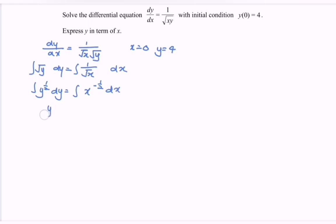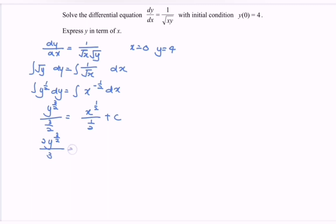Integrating both sides, we get y to the power of 3/2 over 3/2 equals x to the power of 1/2 over 1/2 plus c. Rewriting, this gives us 2y to the power of 3/2 over 3 equals 2 square root of x plus c.